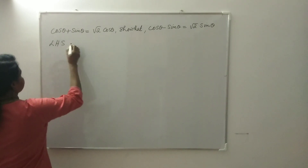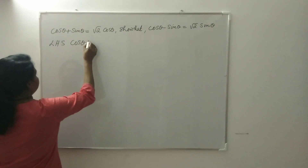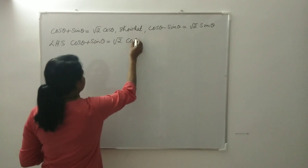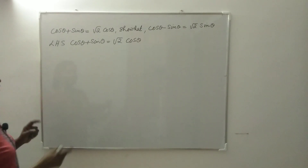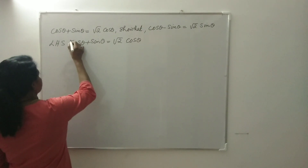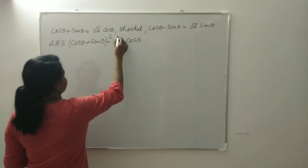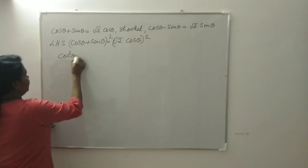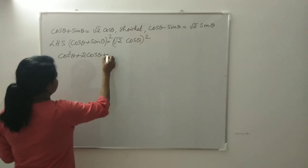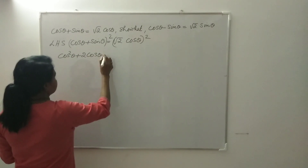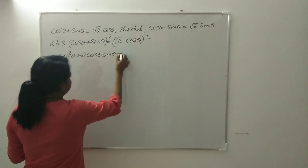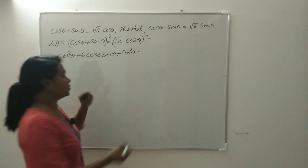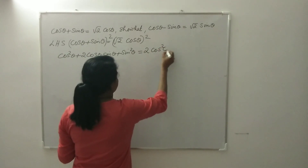First, write the LHS: cos θ + sin θ = √2 cos θ. Squaring both sides, we get cos²θ + 2 cos θ sin θ + sin²θ = 2 cos²θ, since the square of √2 is 2.